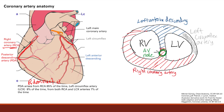That's 85% of the time. However, this posterior descending artery can also come from the left circumflex artery — that happens 8% of the time. That is called a left dominant circulation, because it comes from the left side.